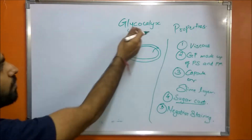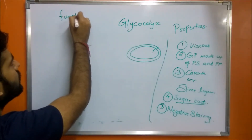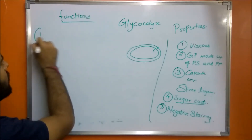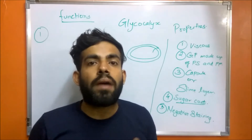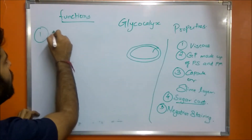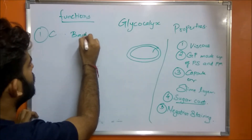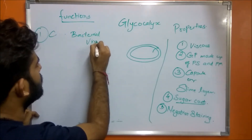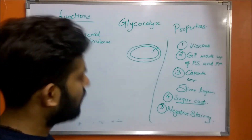Now let us talk about the functions of glycocalyx. The first function is that glycocalyx contributes to bacterial virulence.